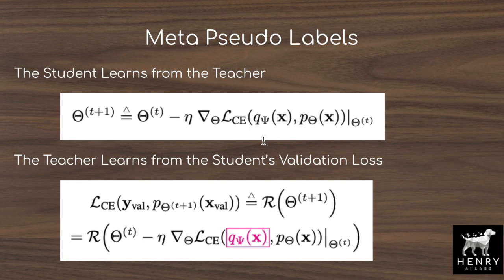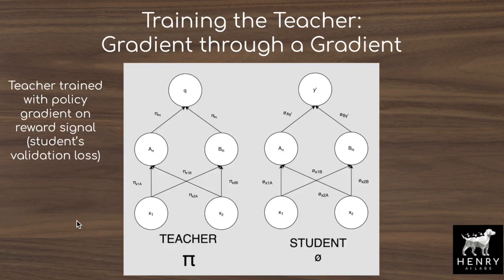Phase two is where the teacher learns from the student's validation loss. The teacher network is evaluated on the student's validation set performance after the student updates to theta_t+1. To propagate this reward back to the teacher's parameters phi, you must take the partial derivative of phi with respect to the validation loss — which requires a gradient through a gradient. In practice, frameworks like TensorFlow or PyTorch handle this via automatic differentiation.